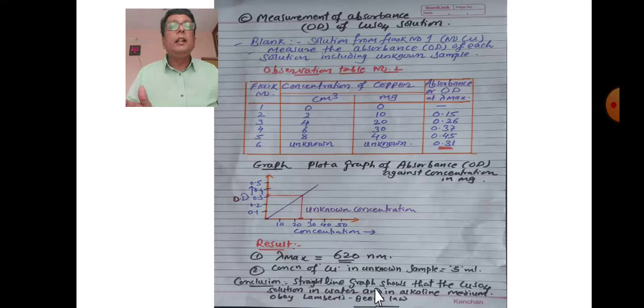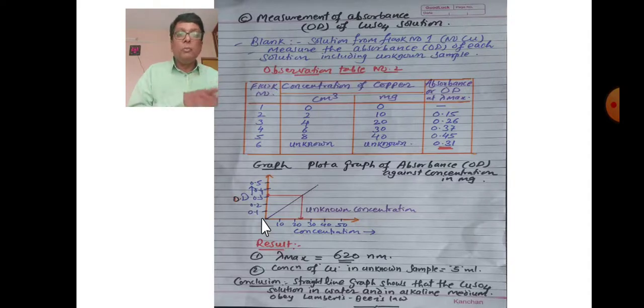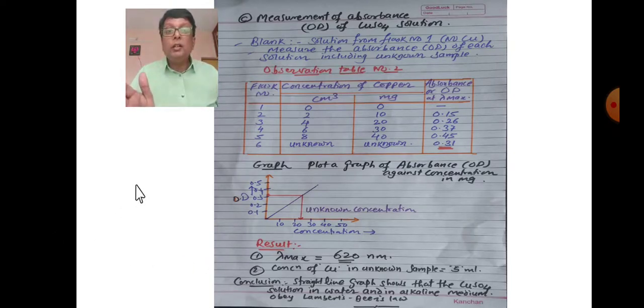The graph shows that the copper sulfate solution in water and alkaline medium obeys Lambert-Beer's law. The straight-line graph passing through the origin verifies Lambert-Beer's law, which states that the concentration of a solution is proportional to absorption of light. The colorimetric experiment is complete.